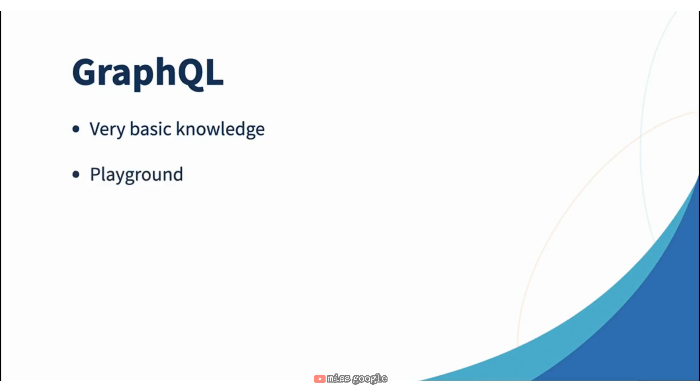You will need to have a GraphQL playground. There are many ways to get one — you can install it as an application, use it in your browser, install it through an app, or use your IDE plugins. It really doesn't matter how you get a GraphQL playground; just get one. If you use Google Chrome, there are some great extensions that allow you to run the playground, and that's what I'm going to use in this course to connect to my GraphQL API.